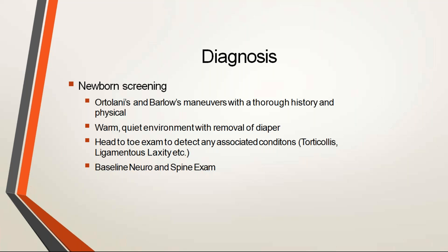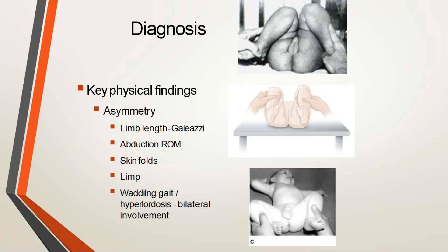Since many associated abnormalities exist with DDH, you need to perform a head-to-toe examination to rule out cerebral palsy, torticollis, or other ligamentous laxity such as dislocatable shoulders. Neurological and spine examination is also required, as these babies may have associated spina bifida. Key physical findings include limb length discrepancy, which can be identified by the Galeazzi test — ask the baby to flex the hip and knee joints and check for symmetry of the knee joint lines. Also assess range of abduction movements and skin folds. If the baby is walking, look for limp or waddling gait. In bilateral involvement, you will see hyperlordosis.